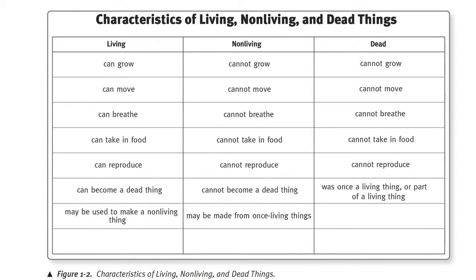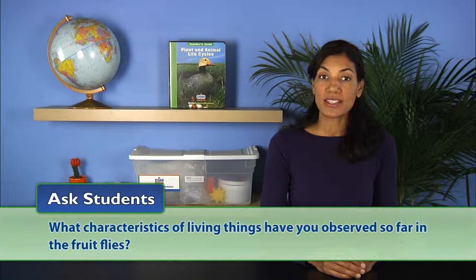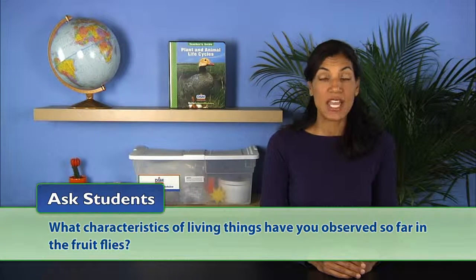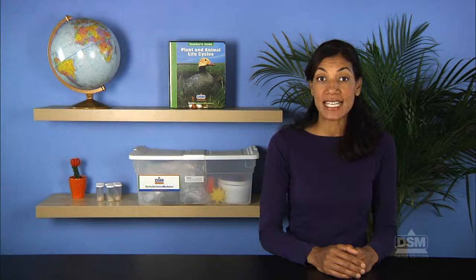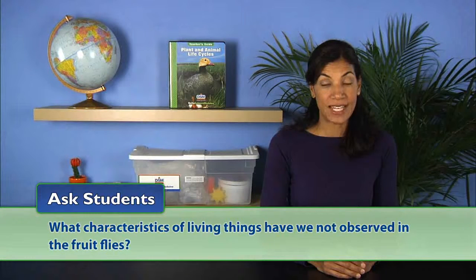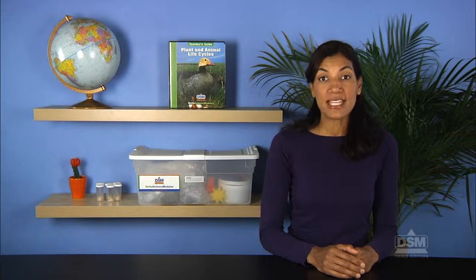Refer students to the chart Characteristics of Living, Nonliving, and Dead Things, and ask, what characteristics of living things have you observed so far in the fruit flies? Explain that it is impossible to see fruit flies breathing because they are so small. Point out that one remaining characteristic on the chart is "can reproduce." If necessary, define this as the ability to have babies or create new life.